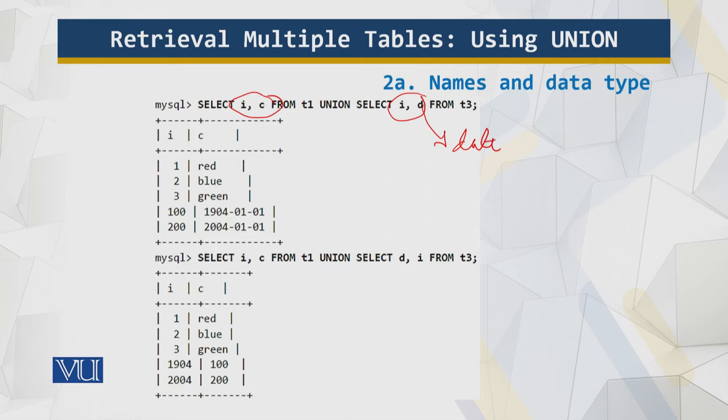We have character here; they are not the same. Columns are matched by position, not by name, which is why these two queries return different results. In both cases, this is the column selected from t1 in c determine the types used in the UNION result. These columns have integer and string type, so type conversion takes place when selecting values from t3.